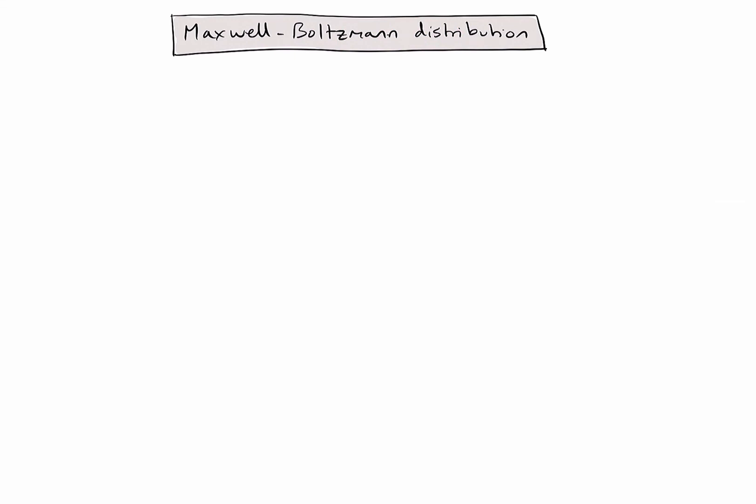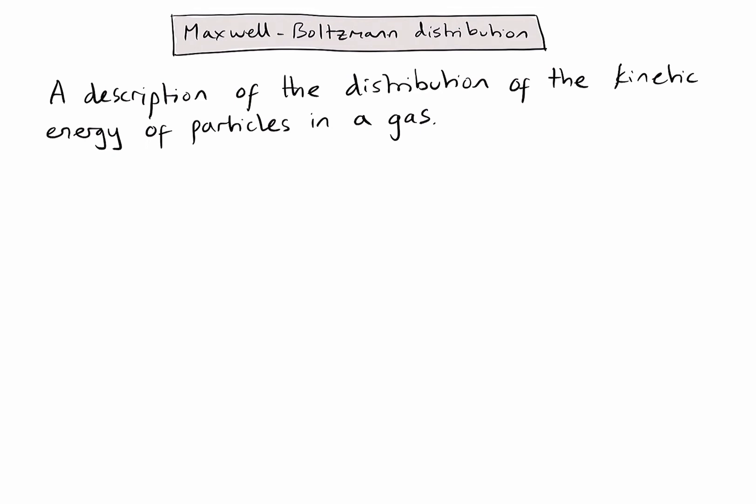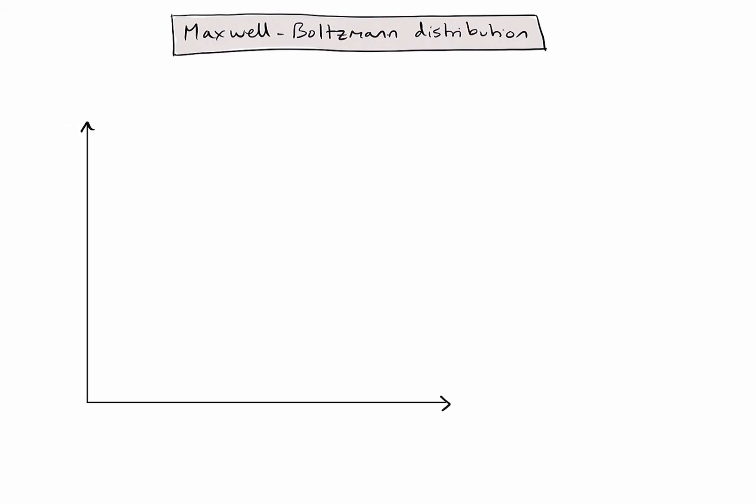A Maxwell-Boltzmann distribution is a description of the distribution of kinetic energy of particles in a gas. This is most commonly modelled in the form of a graph. On the y-axis we normally label the proportion of molecules, and on the x-axis we are considering kinetic energy. The shape of the graph will look something like this.